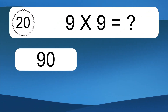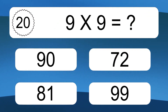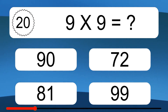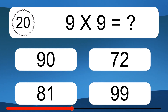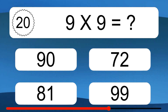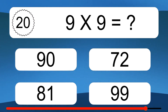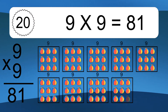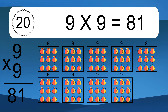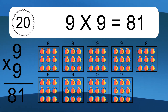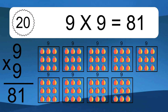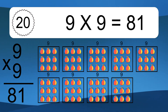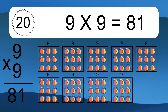9 times 9 equals what? 9 times 9 equals 81. We have 9 boxes, and each box has 9 colorful balls inside. If you count all the balls in all the boxes together, you will have 9 times 9 balls. This equals 81 balls.